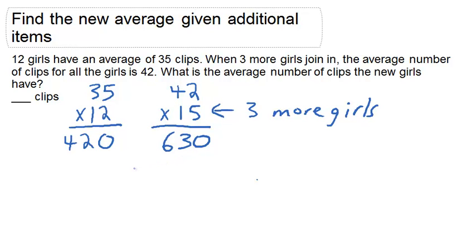So if we do 630 minus 420, this is going to be the number of clips that those 3 girls brought in, which is 210.